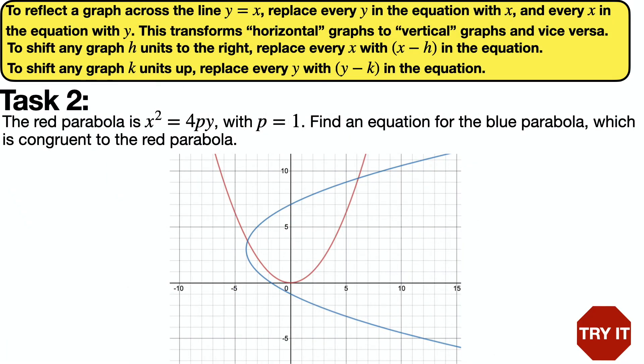Your second task is going to involve shifting and reflecting. So the red parabola, again, is x² = 4py, with p = 1 in this case. Find an equation for the blue parabola, which is congruent to the red parabola. In other words, the exact same parabola just shifted and reflected in order to become horizontal. On the top of the slide are the rules of how we transform things. Please try out this task number 2.